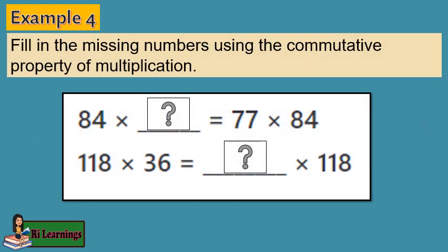Fill in the missing numbers using the commutative property of multiplication. 84 times blank equals 77 times 84. 118 times 36 equals blank times 118. The commutative property states that the multiplication of two numbers remains the same even if the order of numbers is changed. The missing numbers are 77 and 36.